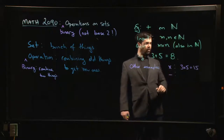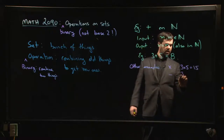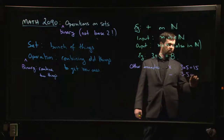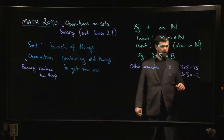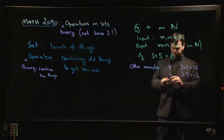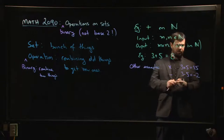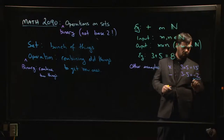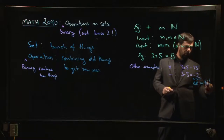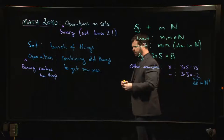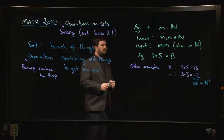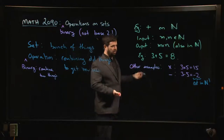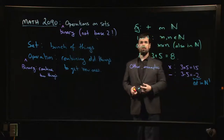We could also try subtraction, although now you have to be a bit careful. If I did three minus five, I get minus two. That's not in the natural numbers anymore. The natural numbers are just the positive integers one, two, three, four, five and so on. As soon as you get a negative number, you're no longer in the natural numbers — you're in the integers.